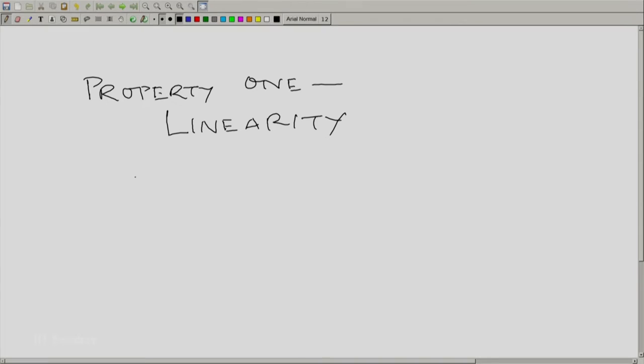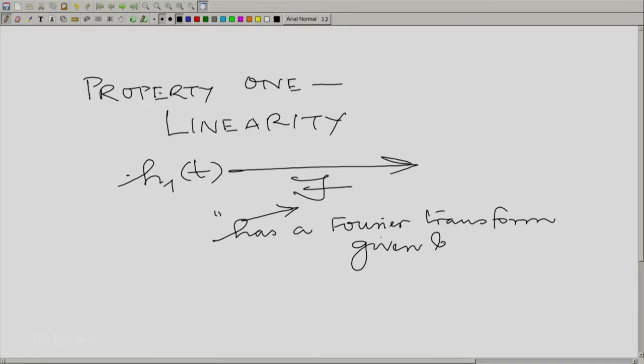If H1(t) has the Fourier—now we are going to use a symbol to denote Fourier transformation—when we write script F like this, we mean has a Fourier transform given by capital H1 of omega. Remember, you could write the Fourier transform either in terms of omega or in terms of f, in terms of the angular frequency or the cycles per second. Of course, omega is equal to 2π f.